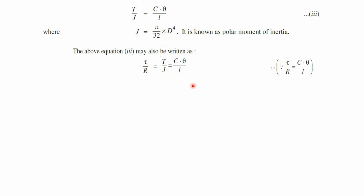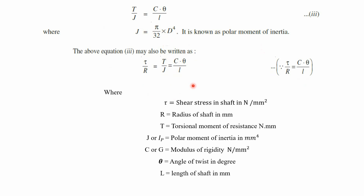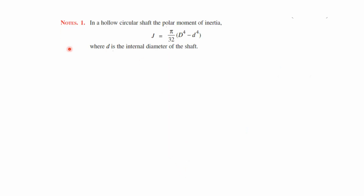In the complete torsional formula: tau is shear stress in N/mm²; r is radius of shaft in mm; T is torsional moment of resistance in N·mm; J or I_p is polar moment of inertia in mm⁴; C or G is modulus of rigidity in N/mm²; theta is angle of twist in degrees; and L is length of shaft in mm. An important note: this formula is for a solid shaft. For a hollow circular shaft, the polar moment of inertia is J = π/32 × (D⁴ − d⁴), where D is the external diameter and d is the internal diameter.